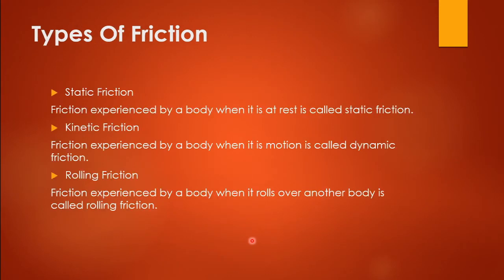Now let's look at the types of friction. The first type is static friction. Static friction is the friction experienced by a body when it is at rest. 'Static' means rest.